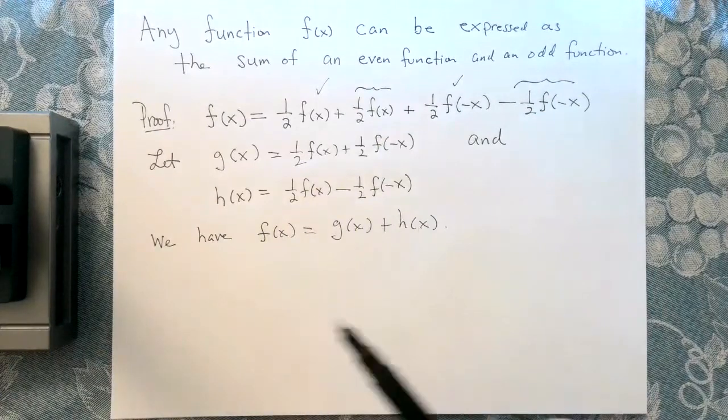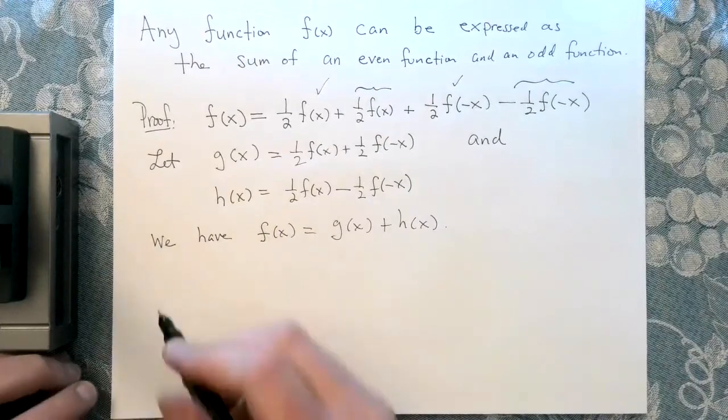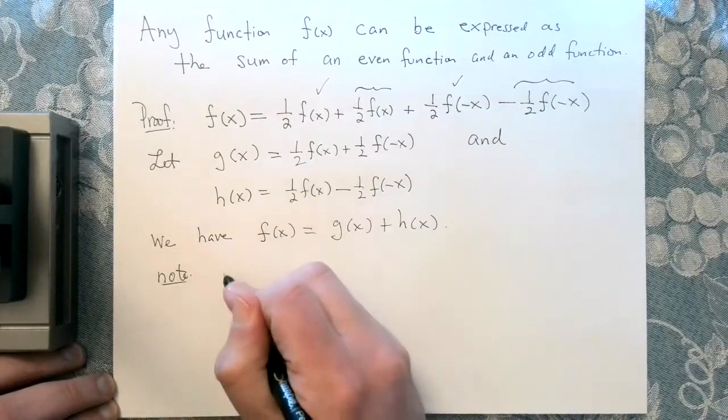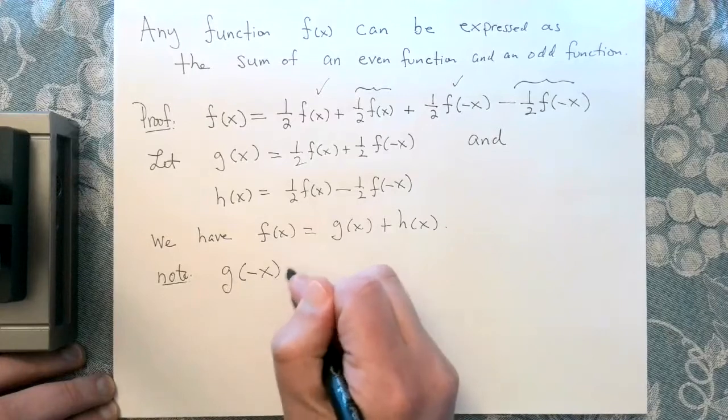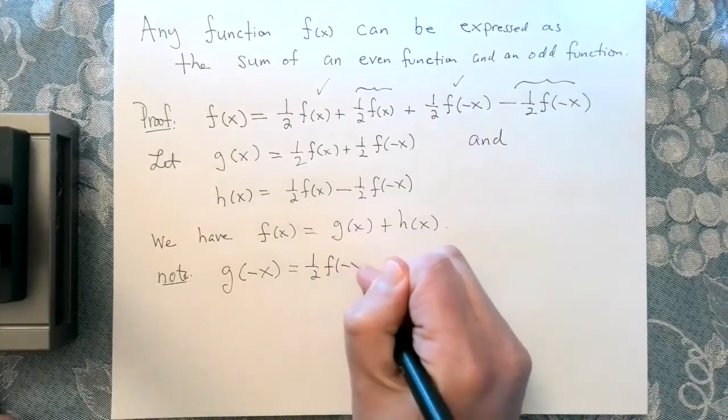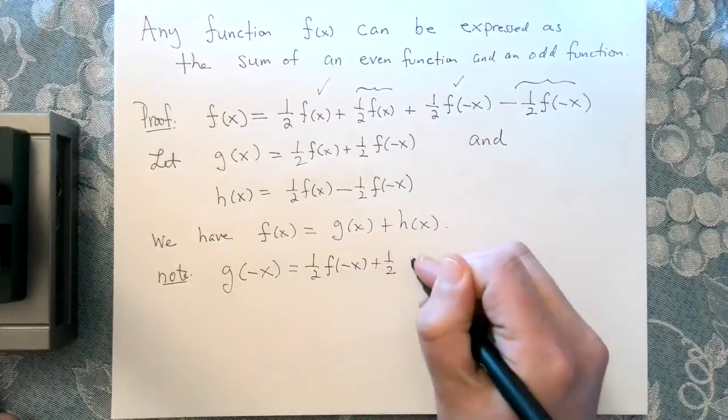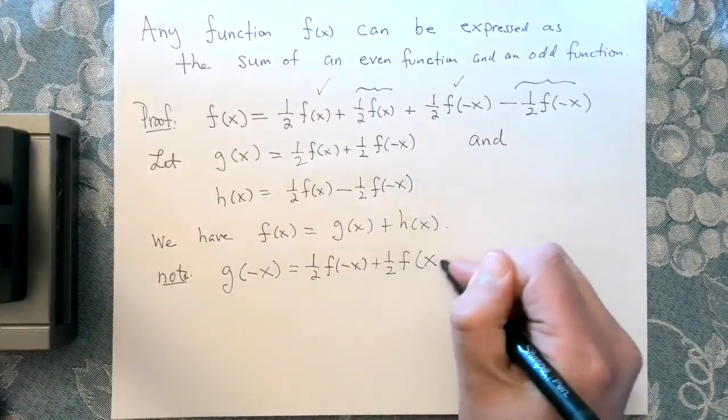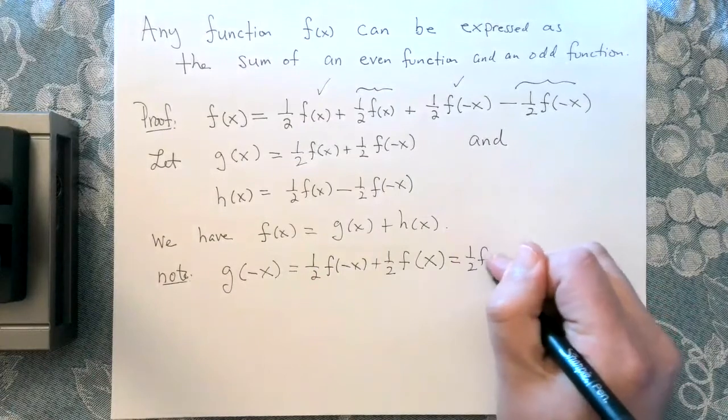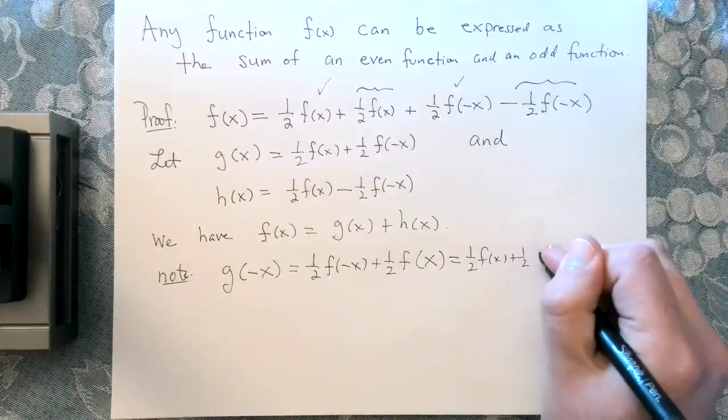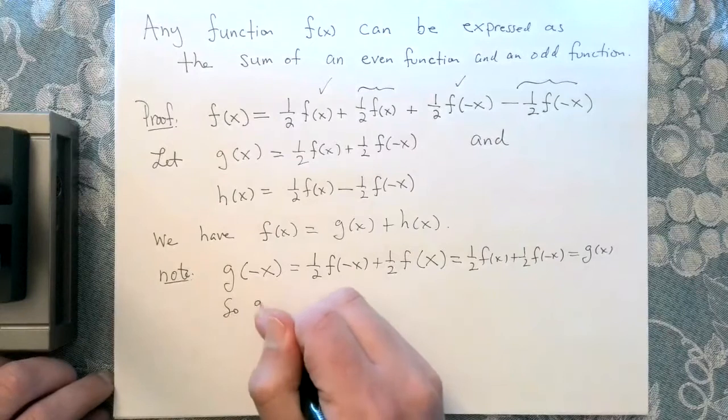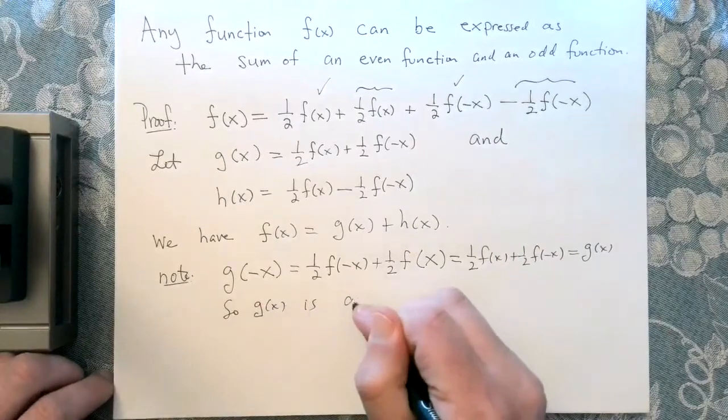Let's do the odd-even function test for each of these. Let's note g(-x). We're going to compute g(-x), that should be one half f(-x) plus one half f(-(-x)), so that's f(x). But that's the same thing as one half f(x) plus one half f(-x), and that's exactly g(x). So g(x) is an even function by definition.